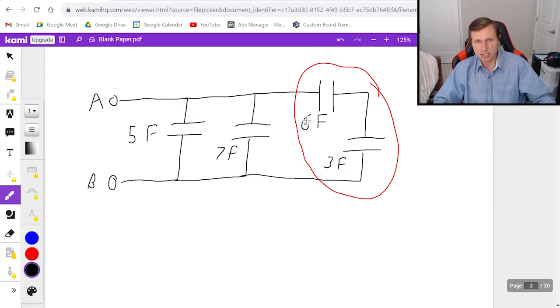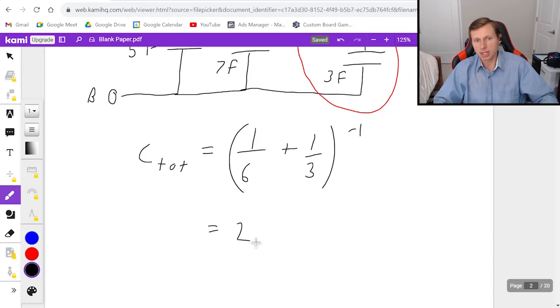So that means I'm doing the weird C total equals one over six plus one over three to the negative first power. If you plug this in a calculator you're just going to get two, which is very friendly numbers. I did that on purpose.